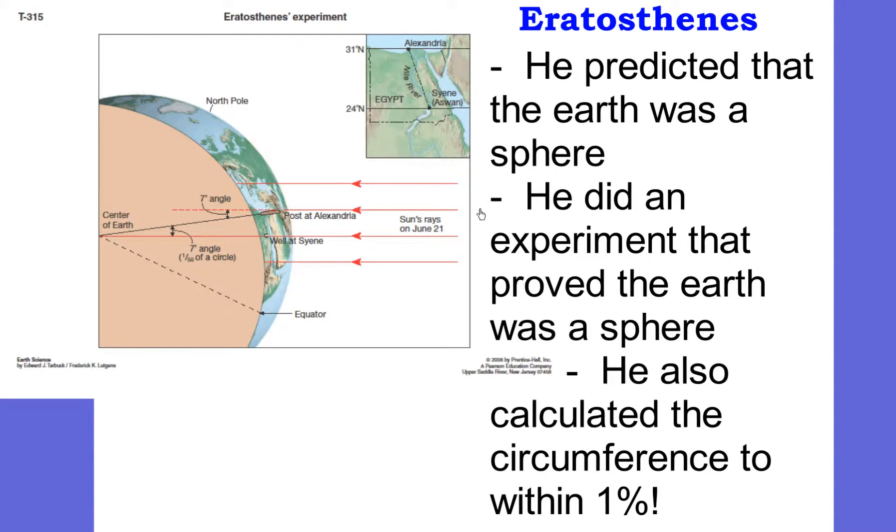Eratosthenes did something awesome for his time, quite an awesome experiment that spanned most of the world they knew about at that time. He predicted that the earth was a sphere. And not only that, he did an experiment to prove it and to measure it. And he calculated the circumference of the earth to within one percent of its actual circumference.